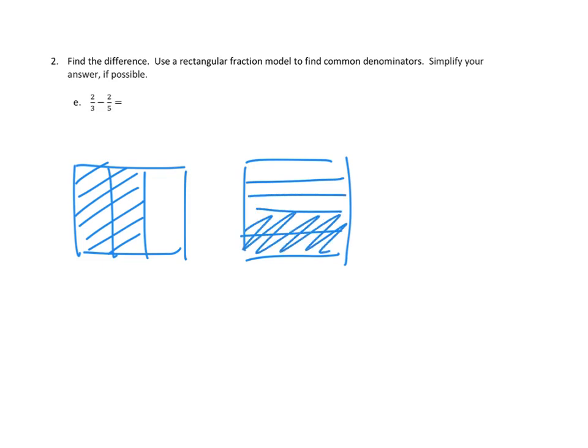You can see how sloppy my models are. Now we're going to do the same thing we've done in the past, which is we're going to partition each of these diagrams the exact same way. So this one has gone vertically into thirds, but now we need to go horizontally into fifths.